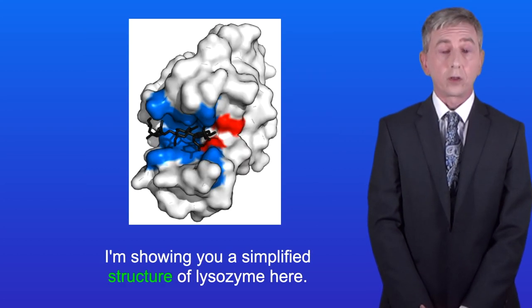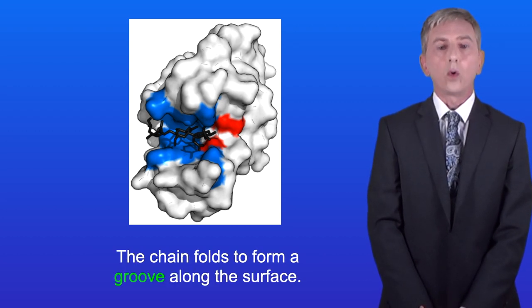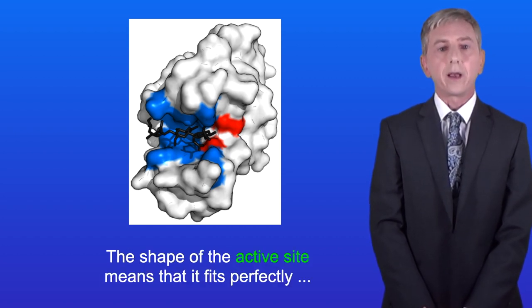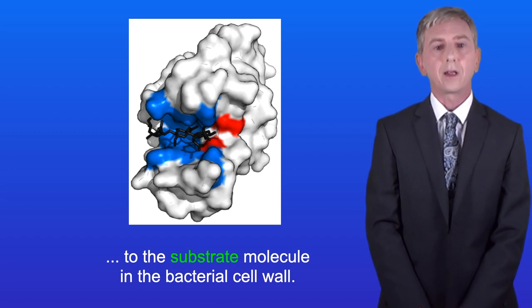I'm showing you a simplified structure of lysozyme here. Lysozyme consists of a single polypeptide chain. The chain folds to form a groove along the surface and this groove is called the active site. The shape of the active site means that it fits perfectly to the substrate molecule in the bacterial cell wall.